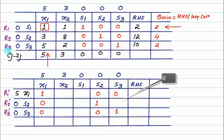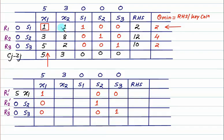For r1 dash: since the key element in the previous r1 row is 1, no modification is needed. So 1 divided by 1 is 1, 1 divided by 1 is 1, the 1 appears as is, 0 divided by 1 is 0, 0 is 0, and the right-hand side 2 divided by 1 gives 2.